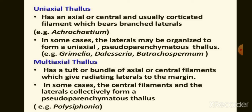To summarize: uniaxial thallus has only one single central or axial filament which gives out well-branched laterals, while multiaxial thallus has a mass of central or axial filaments and each filament gives out lateral branches.